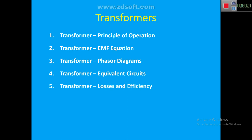The next point is transformer losses and efficiency. For every machine there are some losses, and based on those losses we can calculate efficiency — all of this will be covered in that video. In the following video we will discuss transformer voltage regulation, which is the change in secondary terminal voltage from no load to full load, expressed as a ratio or percentage with respect to the no-load voltage.